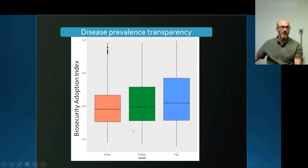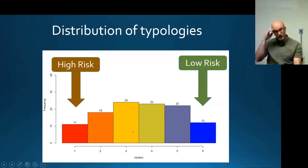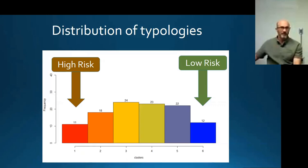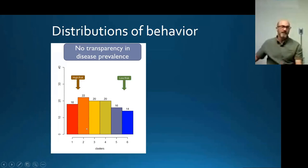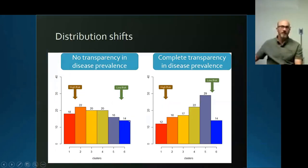One key component is that people behave differently to different things — we have a distribution of behaviors. When we're not telling anybody about where the disease is, most people are behaving in a risky way and not investing much in biosecurity, though some are. When we shift to telling people about where the disease is, they shift to generally putting a lot of money into biosecurity.